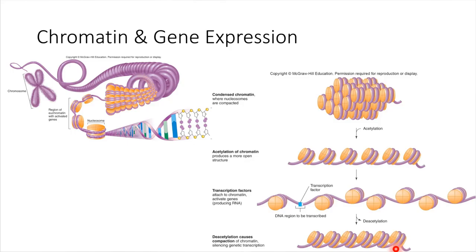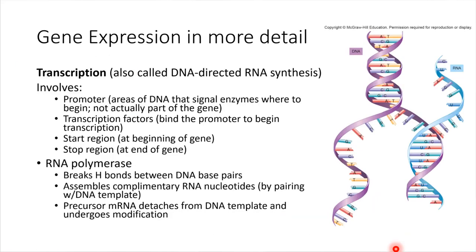Cells have ways of controlling which genes are being expressed. When expression is finished, the cell can remove the acetyl group. Deacetylation takes place, the structure rolls up tightly again, the chromatin becomes more compact, and those genes are no longer expressed. So very careful control is possible inside of cells.